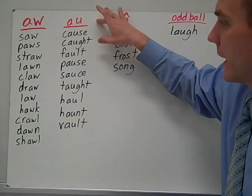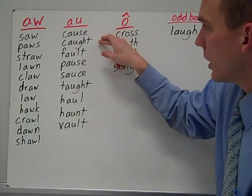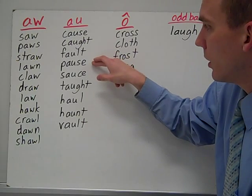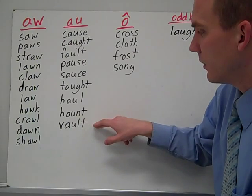Now you have your au words. All of them say aw. Cause, caught, fault, pause, sauce, tot, haul, haunt, and vault.